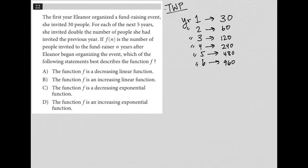And of course, you can definitely and should definitely use your calculator on things like that. So the next sentence says, if F of N is the number of people invited, okay, so that means this entire column represents F of N. So if F of N is the number of people invited to the fundraiser in years after Eleanor began organizing, so this is like N, right, because N is years, which of the following statements best describes the function? Okay.